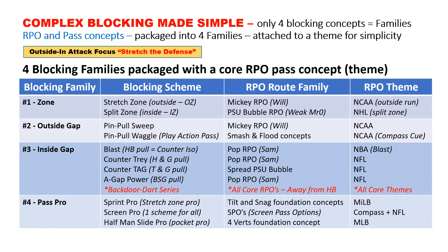The way we make complex blocking very simple is we break it down into four families. You can see to the left the first family is zone — we like to start there. We do an outside and inside type attack, starting outside so that we stretch the defense. You can see then the RPO route family — there's a name with that — it's the pass route for the receivers and the read key. We have themes for these RPOs so that when we communicate, it stays consistent throughout.